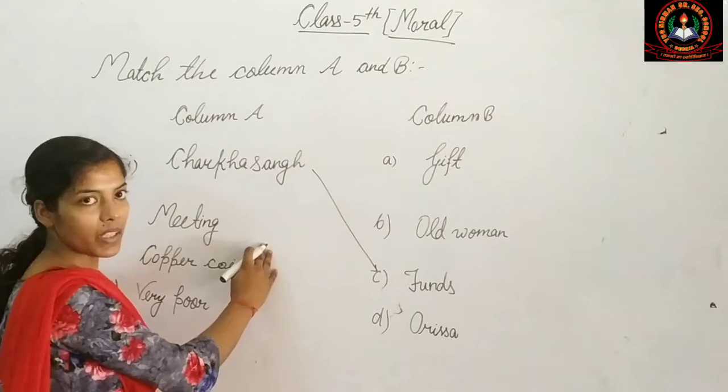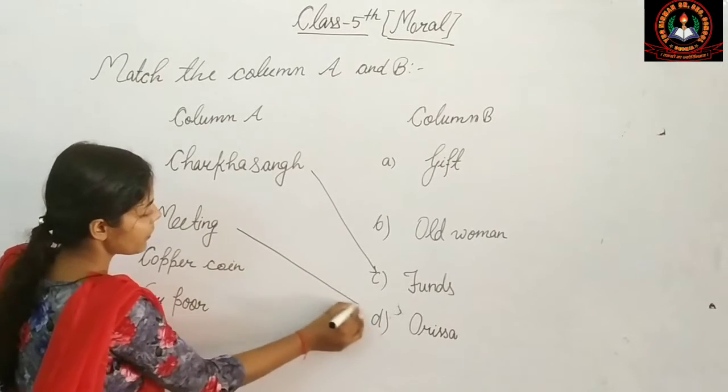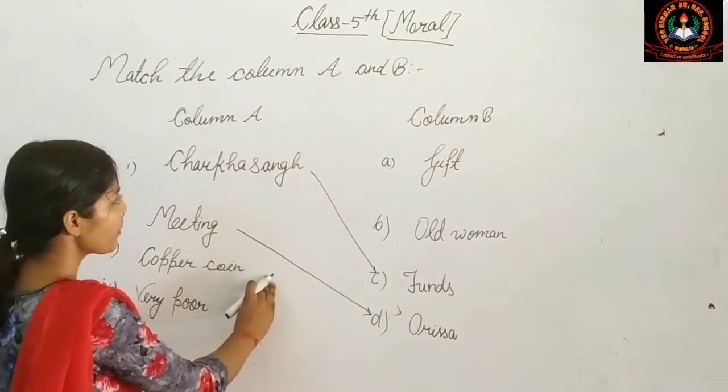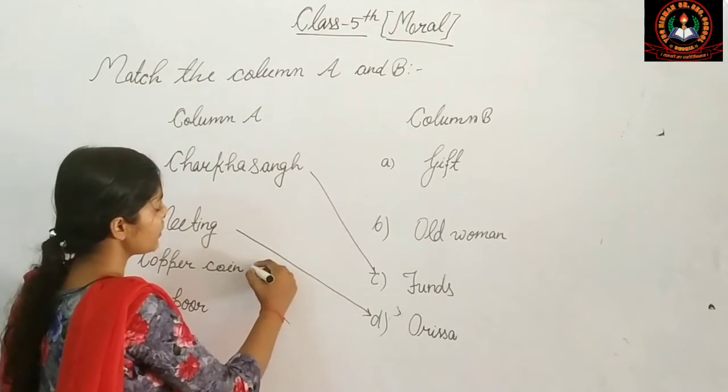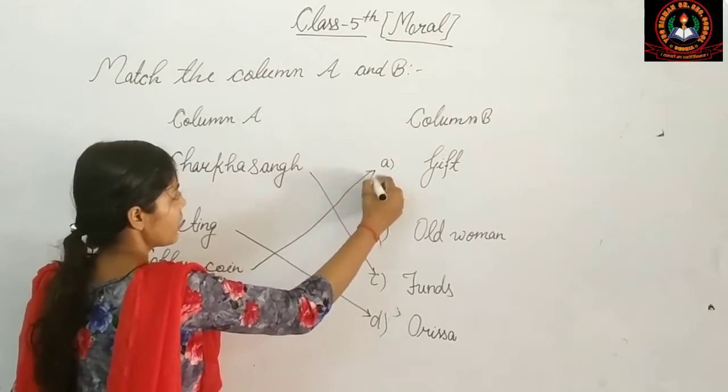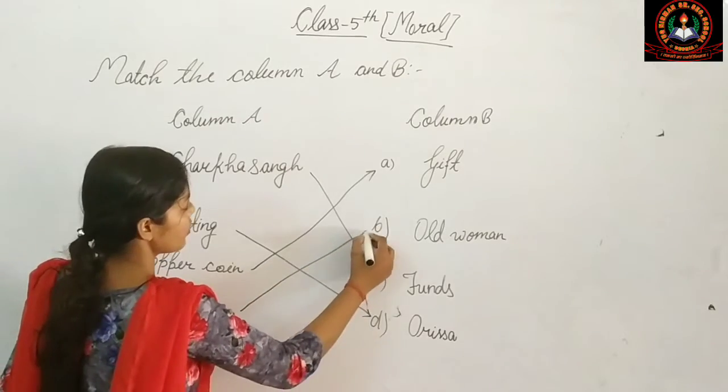Next, meeting. Gandhi Ji had an order. Copper coin, the old woman has given it as a gift. Last time, very old woman.